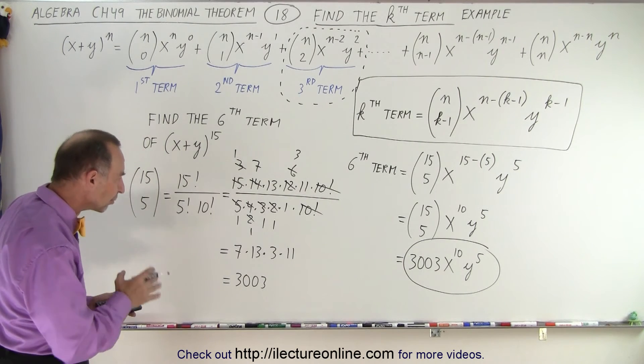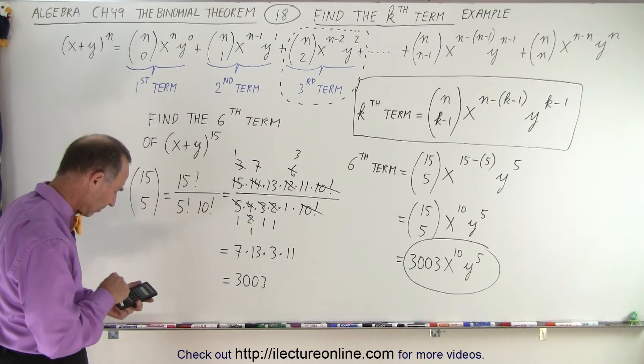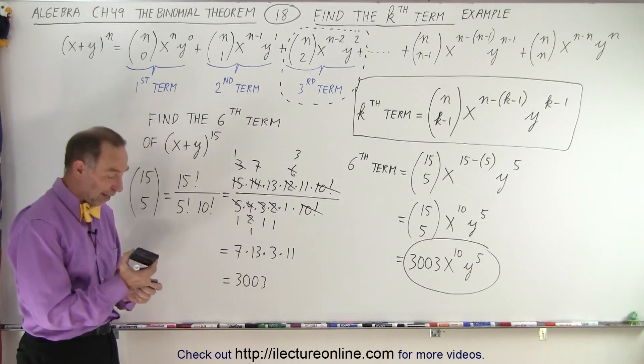So let's quickly check. 7 times 13 times 3... 33 times 13. So 13 times 33 times 7. Yep, 3003. And so that's how we do that.